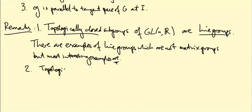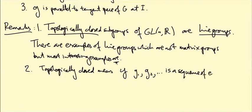Topologically closed means if G₁, G₂, dot dot dot is a sequence of matrices, elements of G, such that Gₖ converges, so the sequence converges in big GL(n,R), in other words you have a sequence of matrices that have a limit, then the limit is actually in G.